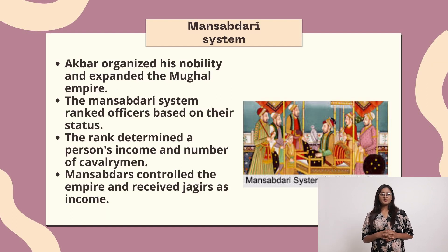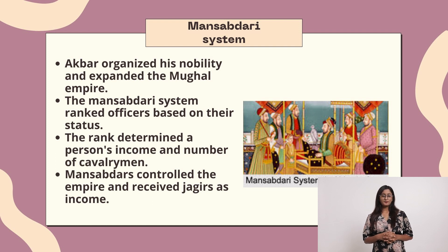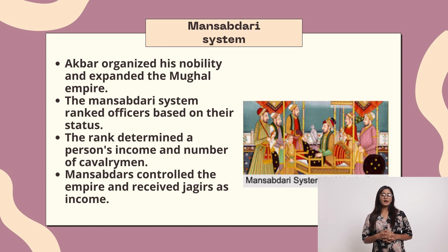Mansabdari System: Akbar organized his nobility and expanded the Mughal Empire. The Mansabdari System ranked officers based on their status. The rank determined a person's income and number of cavalrymen. Mansabdars controlled the empire and received Jagirs as income.